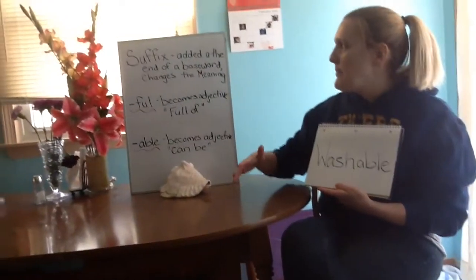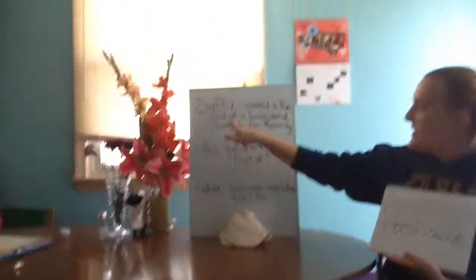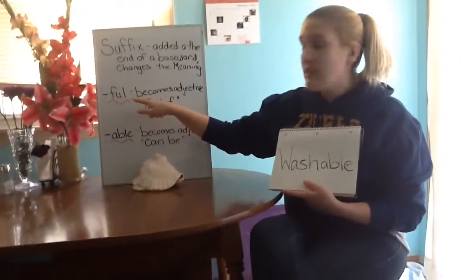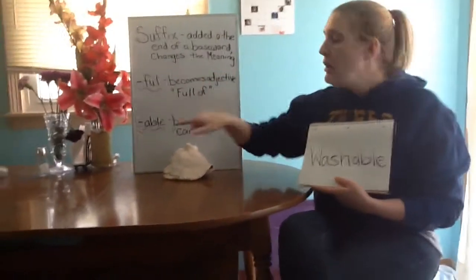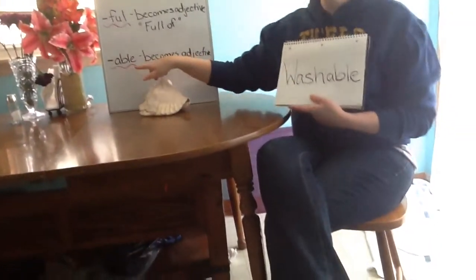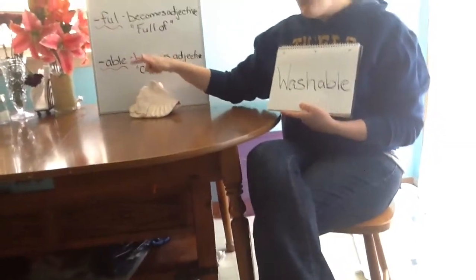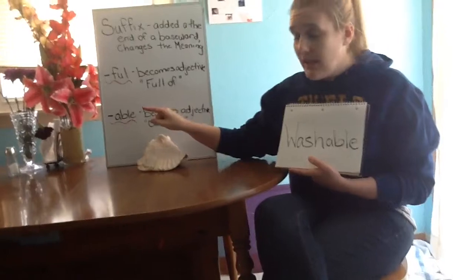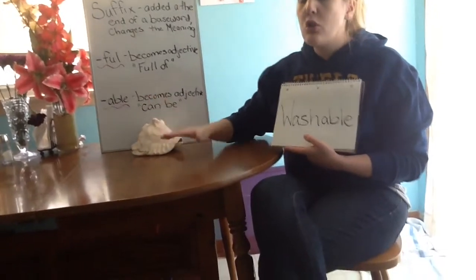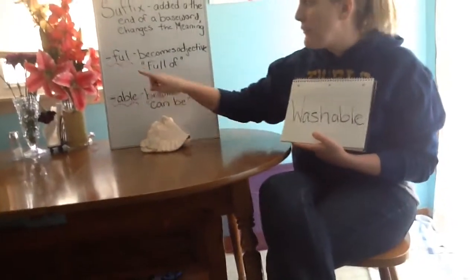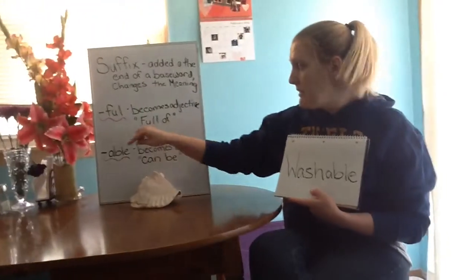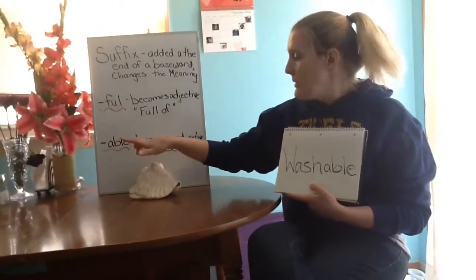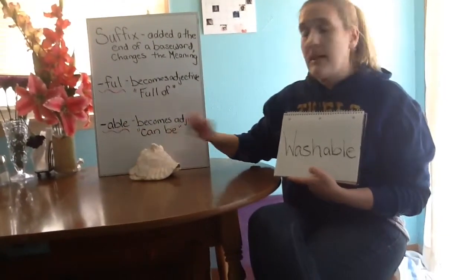Remember, a suffix is added to the end of the base word. You now know the suffix 'full', which means 'full of', and the suffix 'able', which means 'can be'. So when you're reading, you can now unlock so many words by remembering what these suffixes mean.